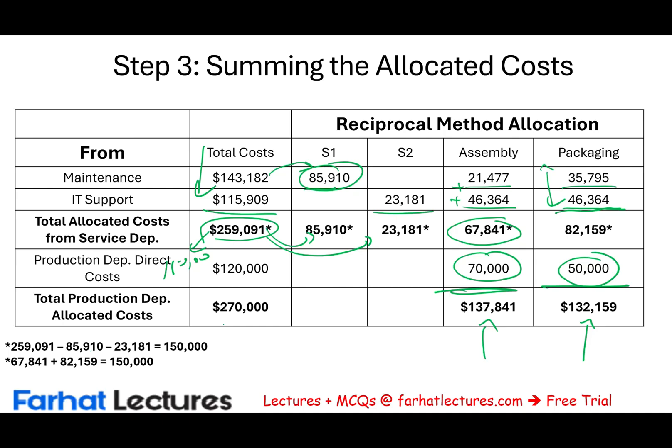To recap: we first allocated some of Maintenance's costs to IT Support and vice versa, then solved using algebra to get the fully reciprocated amounts, and finally allocated those amounts to the production departments. For additional MCQs and resources to help with your CMA exam, CPA exam, accounting, finance courses, or any professional certification, visit FarhatLectures.com. Invest in yourself.